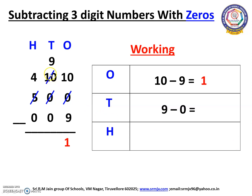Here we have 9 and 0. We can subtract 0 from 9. Open your fingers children. 0 after: 1, 2, 3, 4, 5, 6, 7, 8, 9. How many fingers have you opened? We have opened 9 fingers. So we have to write 9 here.